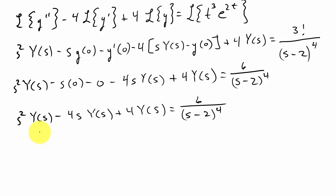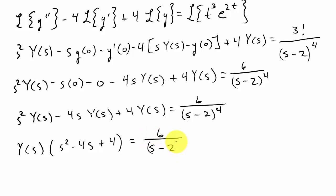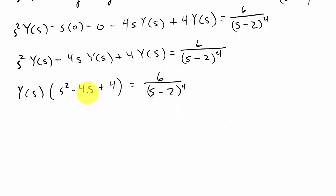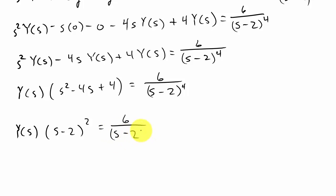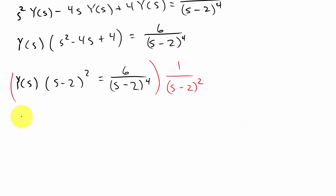Now we factor out Y(s), giving Y(s) times (s squared minus 4s plus 4) equals 6 over (s minus 2) to the 4th. That quadratic factors into (s minus 2) squared, so Y(s) times (s minus 2) squared equals 6 over (s minus 2) to the 4th. Multiplying both sides by 1 over (s minus 2) squared gives Y(s) equals 6 over (s minus 2) to the 6th.